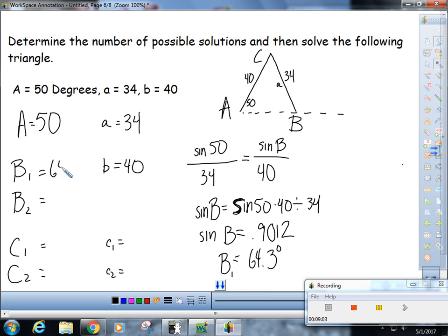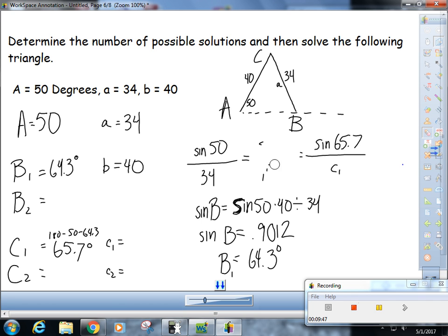So if B₁ is 64.3 degrees, then C₁ would be 180 minus 50 minus 64.3, and that would give you 65.7 degrees. And then you're just going to use the law of sines again: sine of 50 over 34 equals sine of 65.7 over c₁. And that will find us little c₁. So to find that, little c₁ would be, just ignore this for now, and you do cross multiply and divide. So 34 times sine of 65.7 divided by the sine of 50, and so you get little c₁ would be 40.5 units.